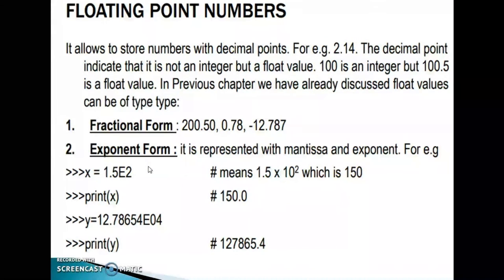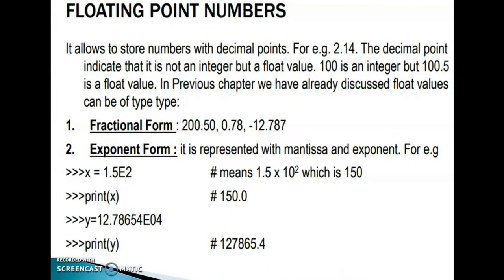Next, floating point numbers. It allows storing numbers with decimal points, for example 2.14. The decimal point indicates it is not an integer but a float value. 100 is an integer, but 100.5 is a float value. Float values can be of two types: fractional form and exponent form. Fractional form examples: 200.50, 0.78, -12.787.